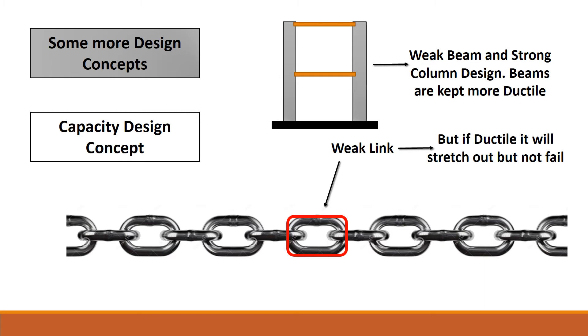The same concept can be utilized when talking about a structural frame with weak beams and strong column design. Strong columns would not fail first, and plastic hinge formation would occur first in the weak beam. If the beams are kept more ductile, there will be a lot of stretching and ductile failure of the structure. A strong column weak beam feature is the basic concept in the capacity design of structures.